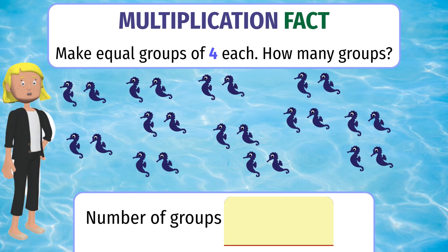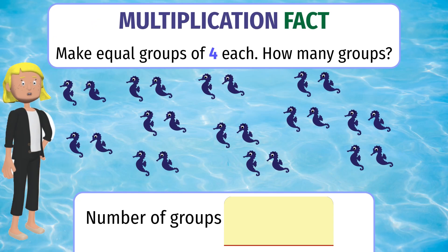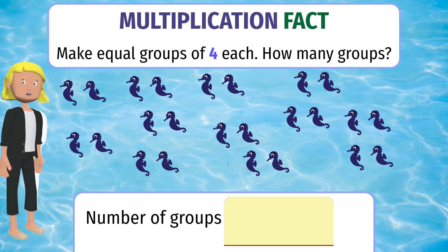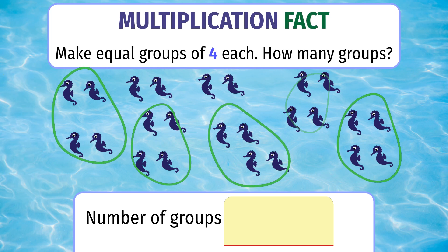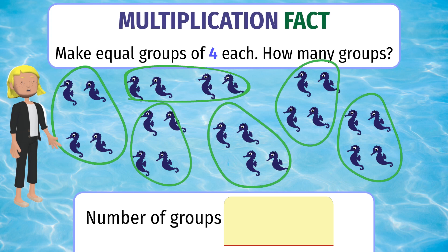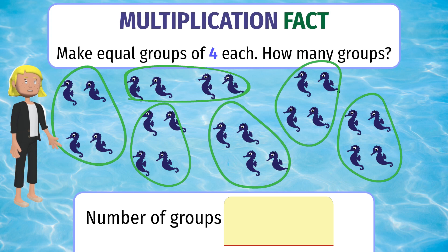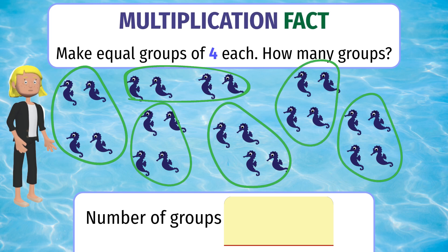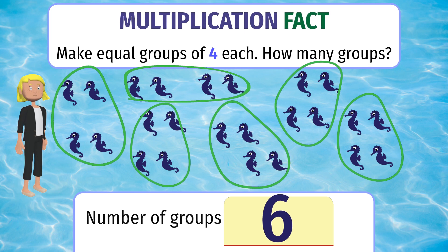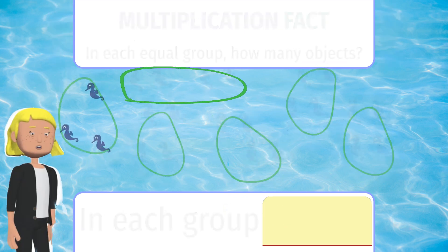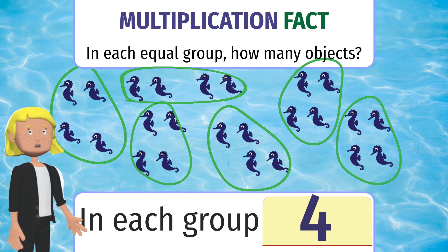In each group, how many seahorses are there? For the multiplication fact to work, remember that the groups have to be identical. In this case, let us divide the crowd of seahorses into groups of 4 by circling. How many groups did we get? 6 groups. In each group, there are 4 seahorses.